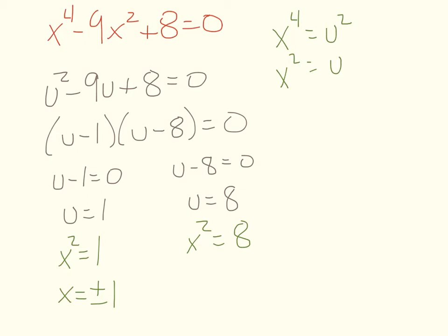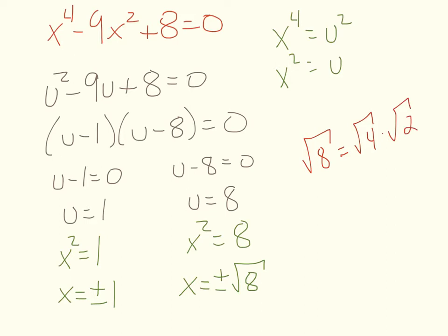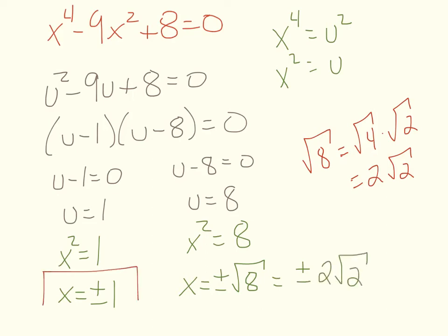For the other equation, x squared equals 8, taking the square root gives x equals plus or minus the square root of 8. Simplifying: the square root of 8 equals the square root of 4 times the square root of 2, which equals 2 radical 2. So we get positive and negative 2 radical 2. That gives us our four answers total, which is what we were looking for.